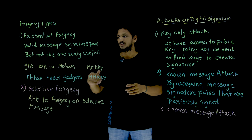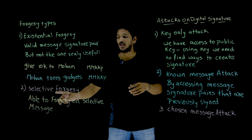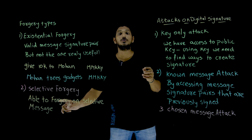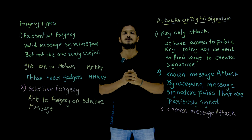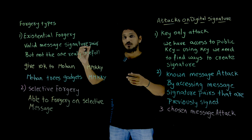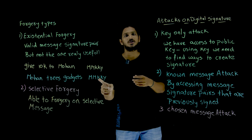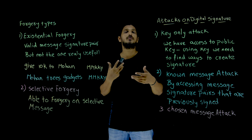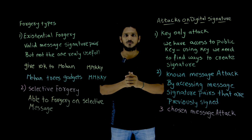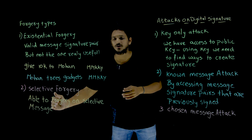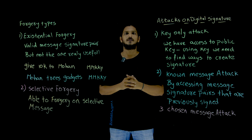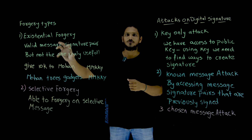The second type is selective forgery — meaning you are able to forge on selective messages, identifying meaningful messages that give the same signature. If you identify meaningful messages that produce the same signature, it is going to be very difficult and we cannot allow this. These are the two types of forgery.